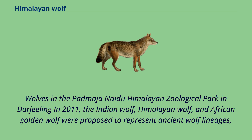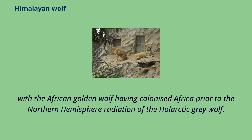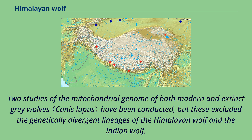In 2011, the Indian wolf, Himalayan wolf, and African golden wolf were proposed to represent ancient wolf lineages, with the African golden wolf having colonized Africa prior to the northern hemisphere radiation of the whole arctic gray wolf. Two studies of the mitochondrial genome of both modern and extinct gray wolves have been conducted, but these excluded the genetically divergent lineages of the Himalayan wolf and the Indian wolf.